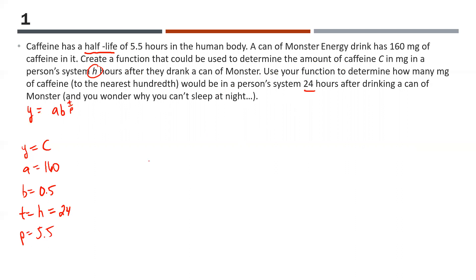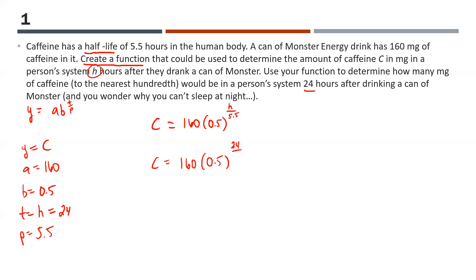So the function is: C equals 160 times 0.5 to the power of H over 5.5. That's the answer to the first part. For the second part, we plug in 24 hours: C equals 160 times 0.5 to the power of 24 over 5.5, and that gives us — to the nearest hundredth — 7.77 milligrams.